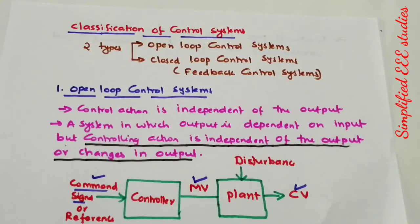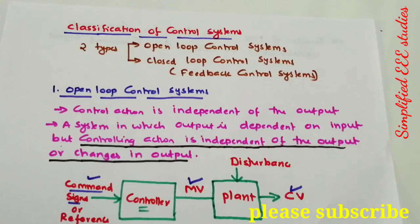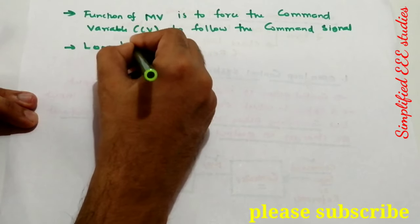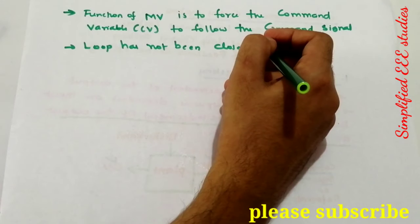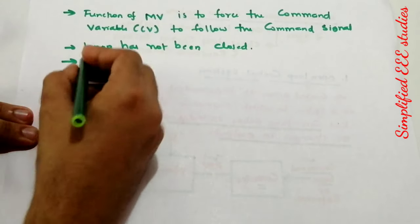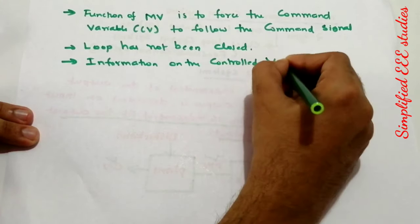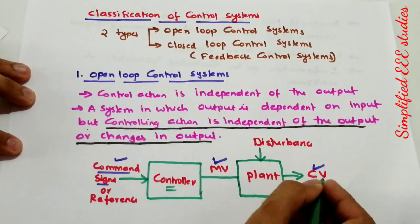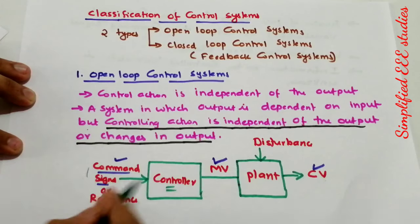The controller is designed based on the nature or previous experience of the plant. One important point: the loop has not been closed — that is why it is an open loop control system. Information on the controlled variable is unknown at the input side or command signal.